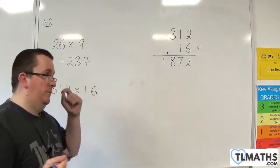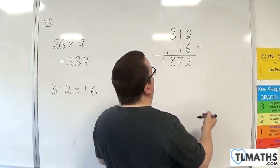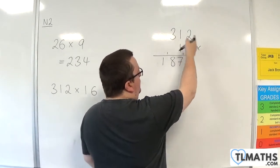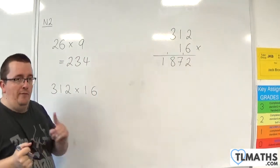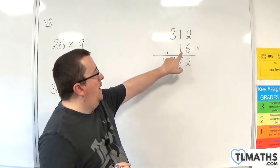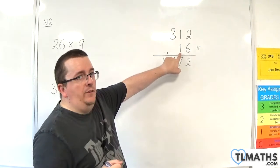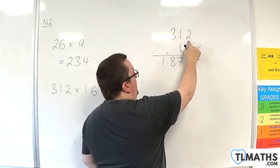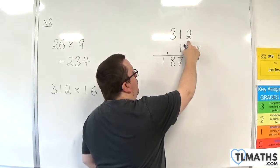But we're not done. Because we still need to multiply this 1 by the 312 as well. However, the 1 that is in here is in the 10s column. So essentially, it is 10 times 312.